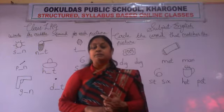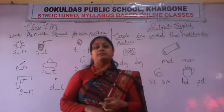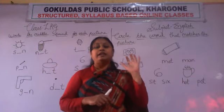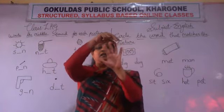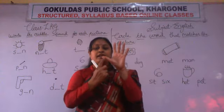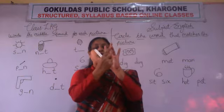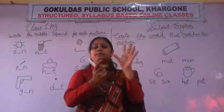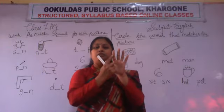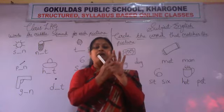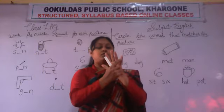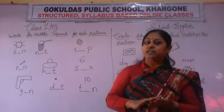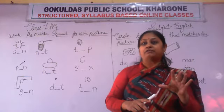We have learnt vowels. Tell me how many vowels are there? There are 5 vowels. Name the vowels: A, E, I, O, U. There are 5 vowels — A, E, I, O, U. Sound of A: A. Sound of E: A. Sound of I: E. Sound of O: O. Sound of U: A. We have learnt all the words related to all 5 vowel sounds.